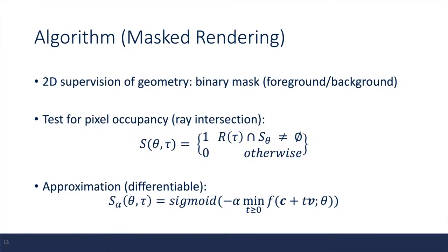And then to test if a pixel is occupied by the object, we can basically use this ray intersection equation. So if we shoot rays through the pixel and intersect with the surface, the equation will output 1. Otherwise, it outputs 0.